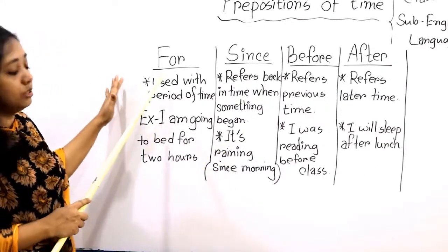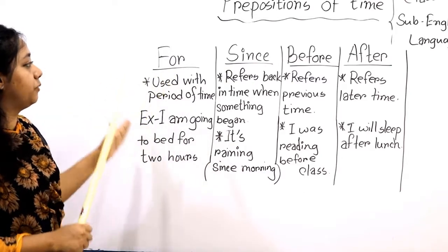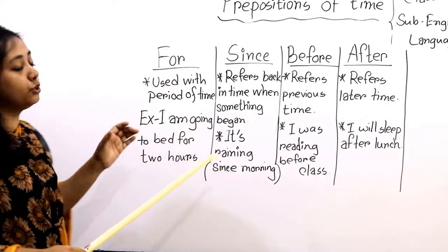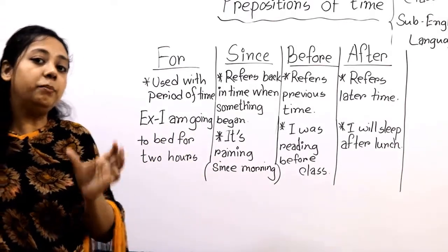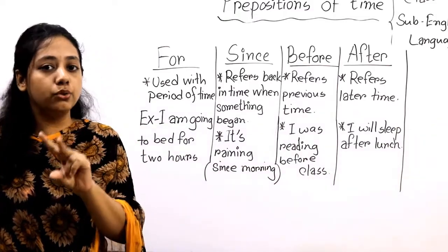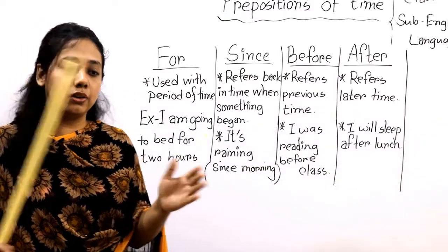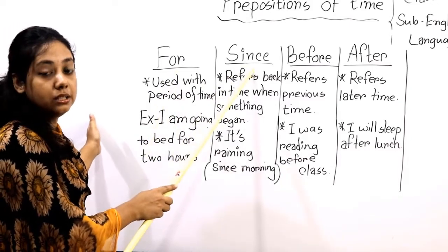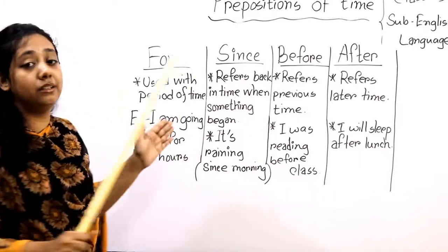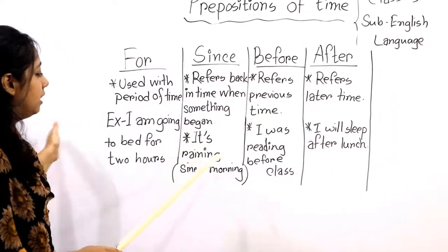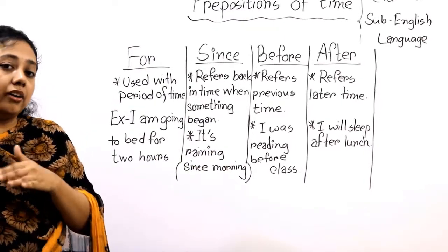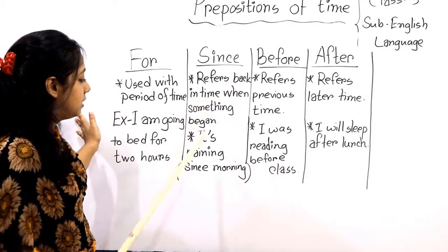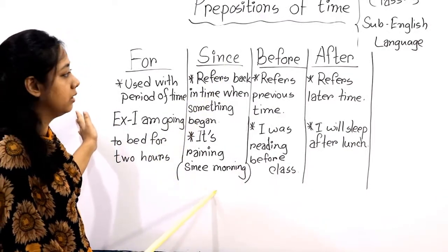'For' sits before a definite time. Like: I am going to bed for two hours. If I mention any specific time like two hours, three days, or four hours, we write 'for' before that time. 'Since' sits before indefinite time. For example: it's raining since morning — here I don't mention a specific time, that's why 'since' sits before it.